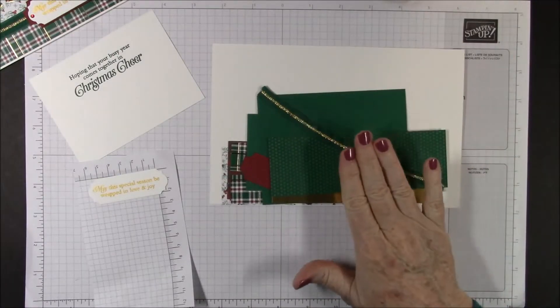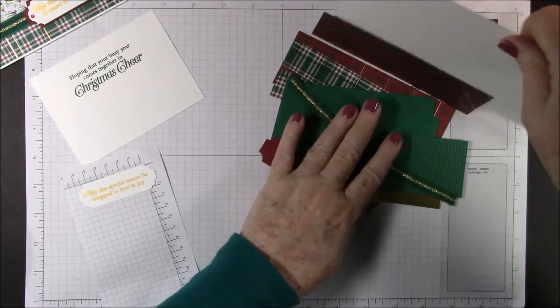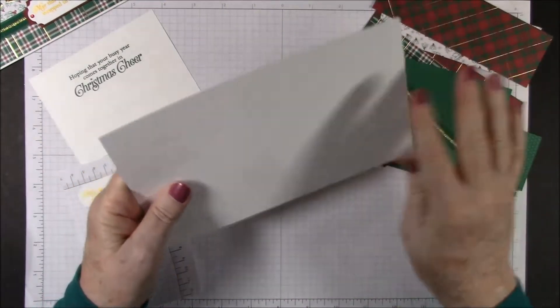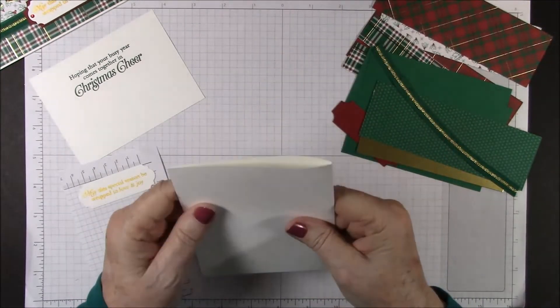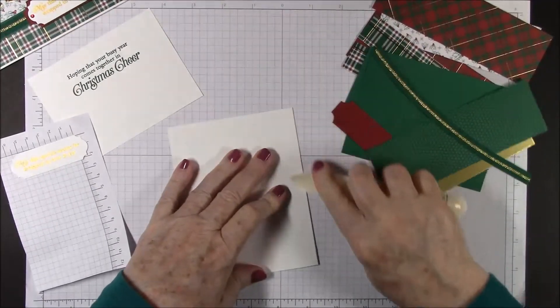We're going to bring in the items from our kit. We'll get our thick whisper white card base. This is eight and a half by five and a half scored at four and a quarter. We get our bone folder and we're going to crease that fold.